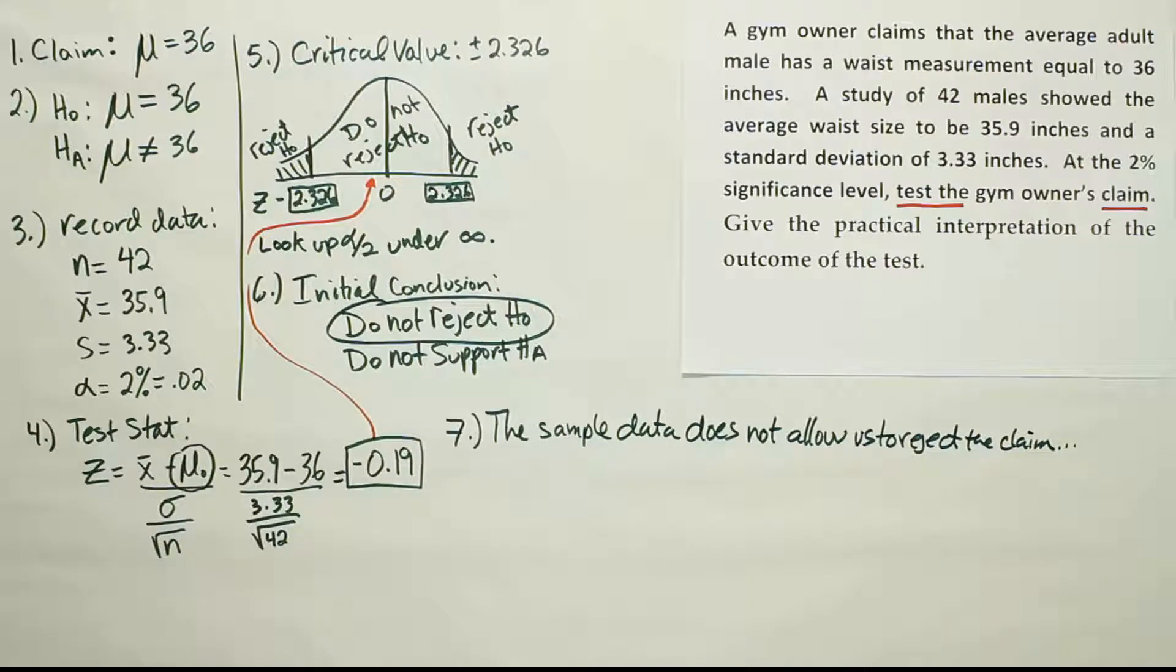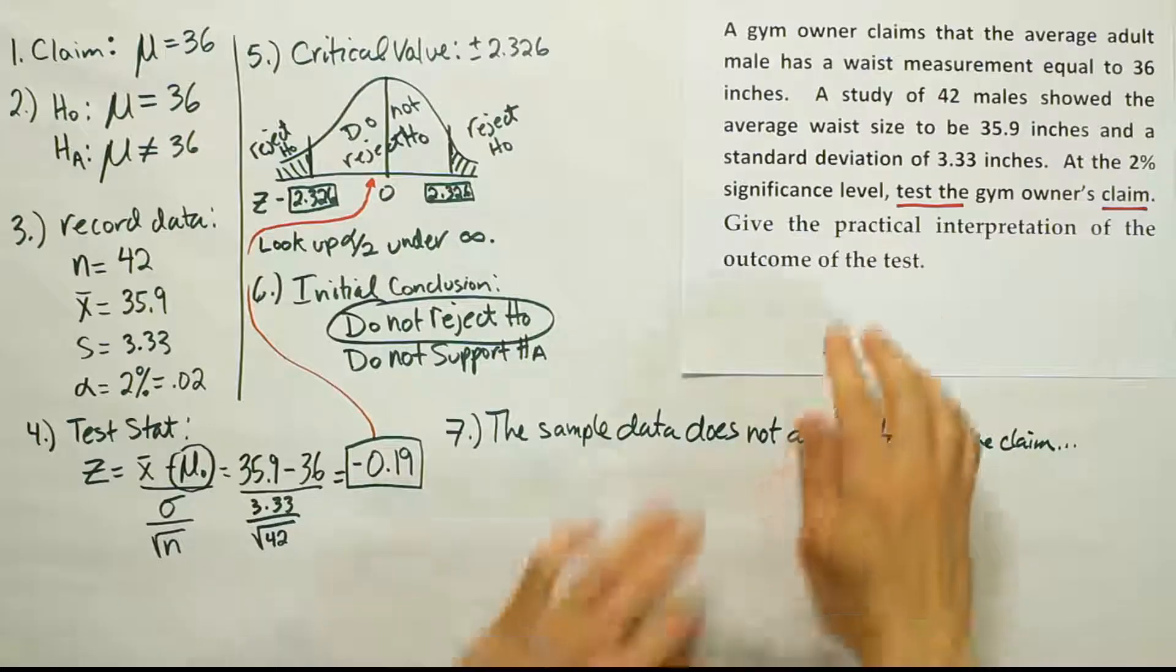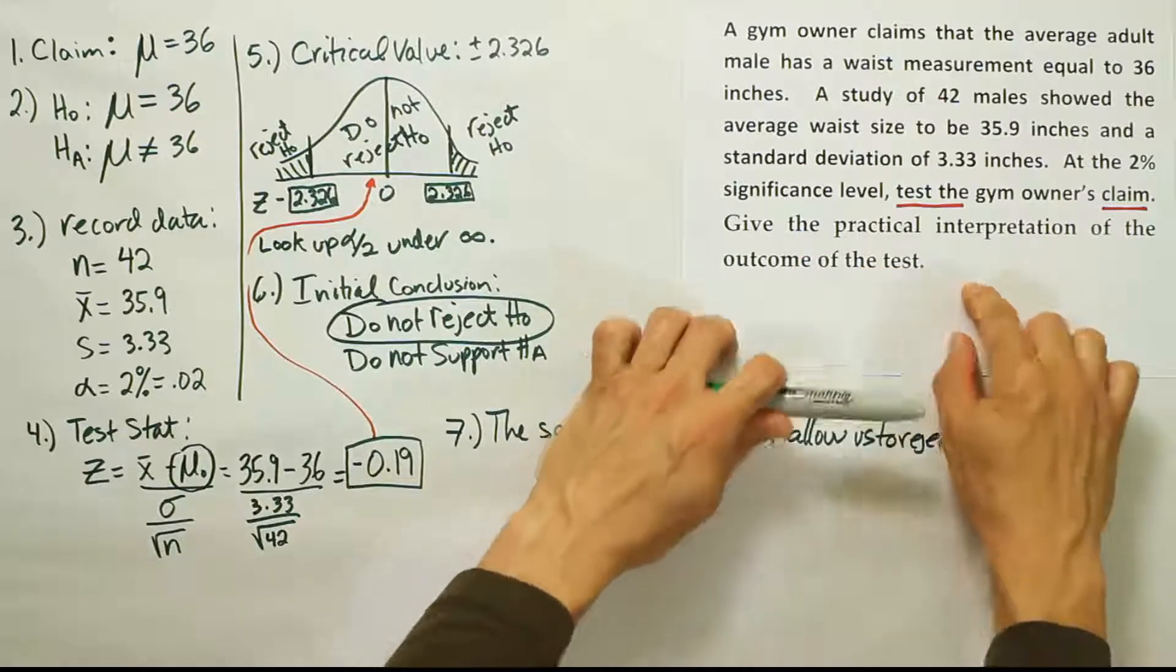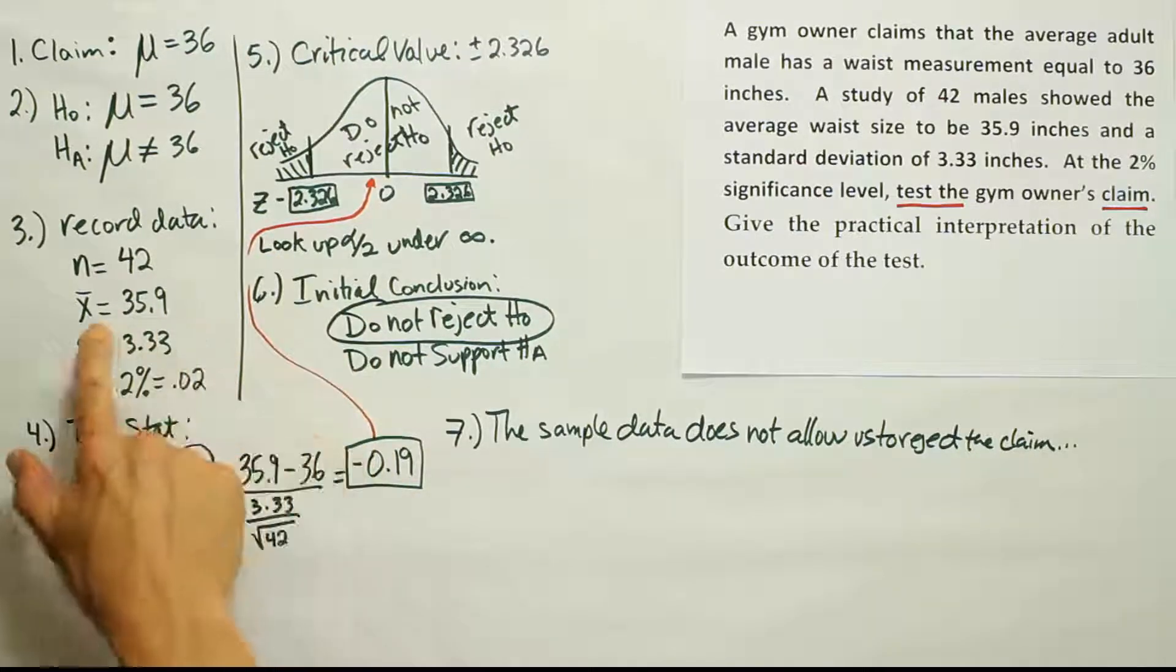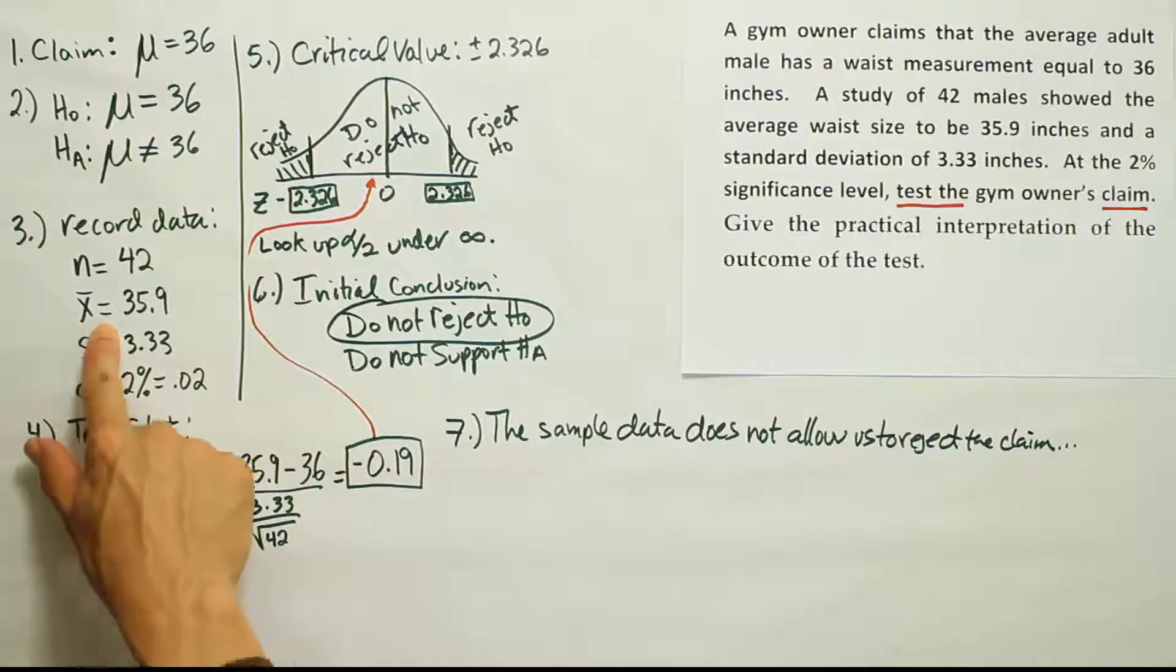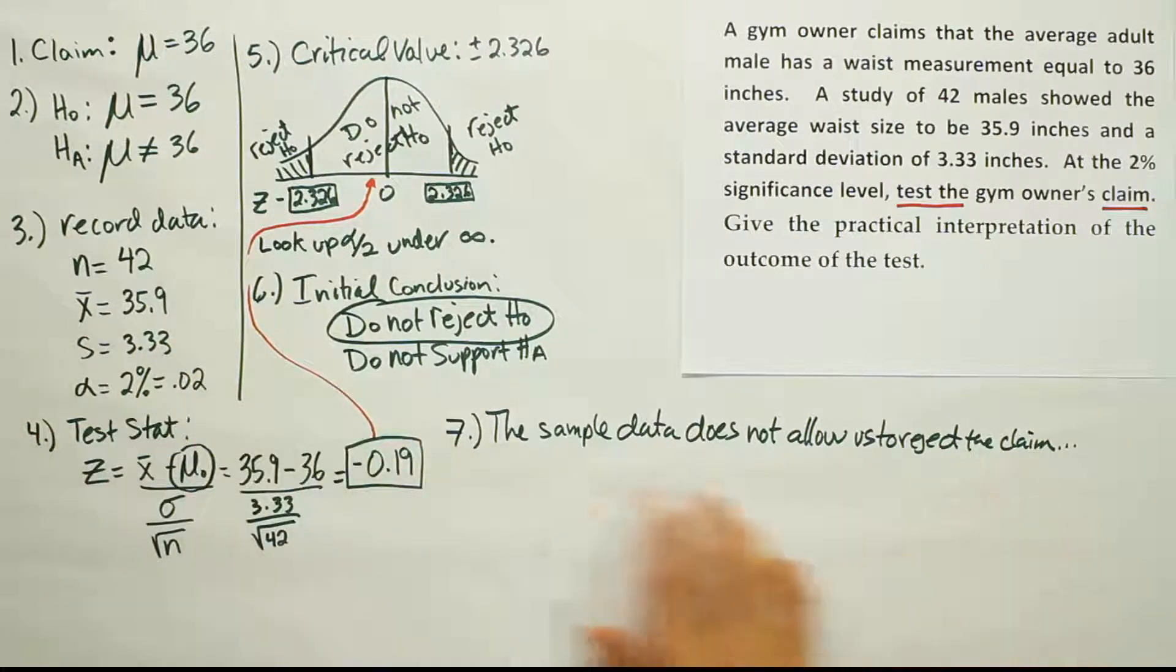In this case, it does not allow us to reject the claim that the average waist size is equal to 36. So when it says give the practical interpretation of the outcome of the test, basically what we're saying is that based on this data, we cannot refute the gym owner's claim. The gym owner claims that the waist measurement for the average adult is 36 inches, and this data does not refute that. Of course, it makes sense, because look at our X bar, it's so close to 36, right? So at this point, it makes sense that we're not rejecting the gym owner's claim. We're saying this data does not allow that to happen, so we're basically saying that this data makes him appear to be correct.